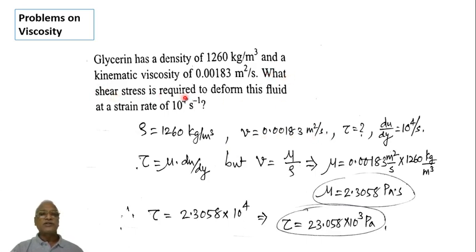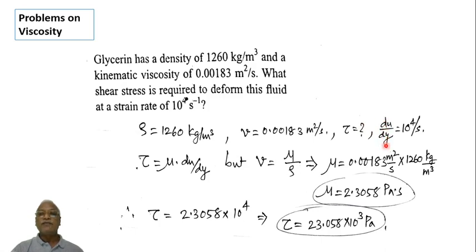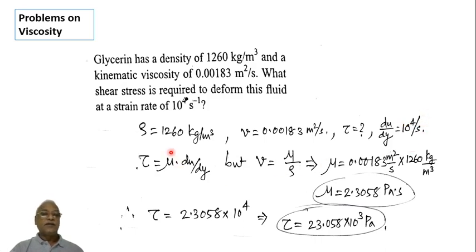What shear stress is required to deform this fluid at a strain rate of 10 raised to 4 per second? The shear strain rate is represented as du/dy and is directly given as 10 raised to 4 per second. Strain has no units, but strain rate has units of per second.